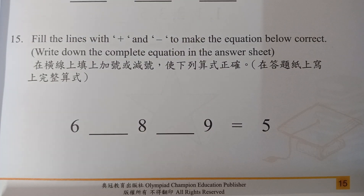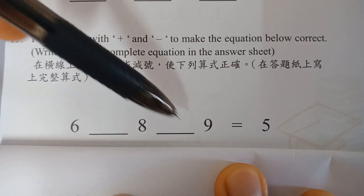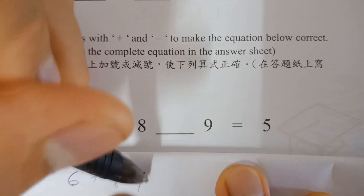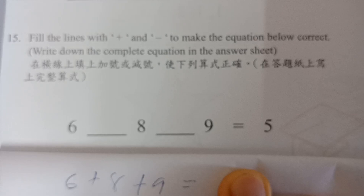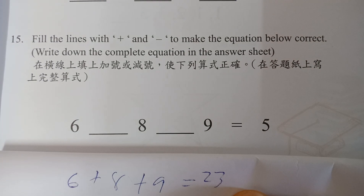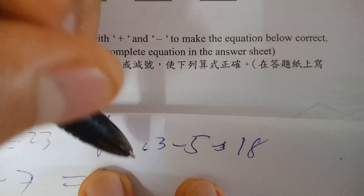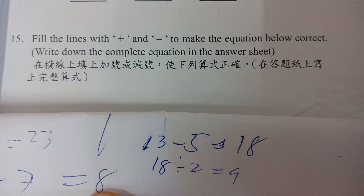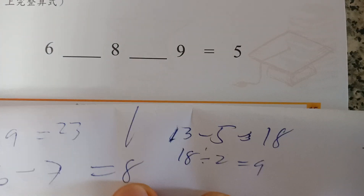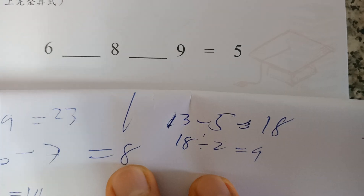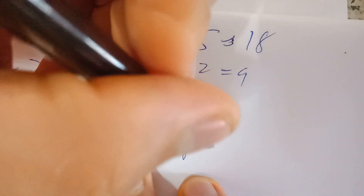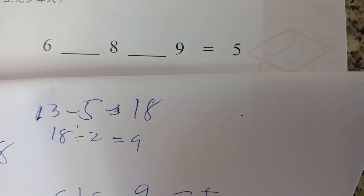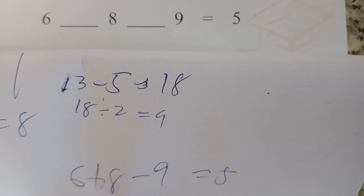Number fifteen: similar problem — fill with plus or minus. Add all numbers: 6+8+9 = 23. Subtract 5: 23−5 = 18. Divide 18 by 2 = 9. So 9 is the negative part. The equation is: 6+8−9 = 5. Check: 14−9 = 5. Correct.